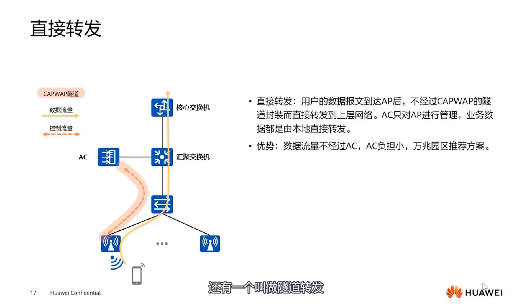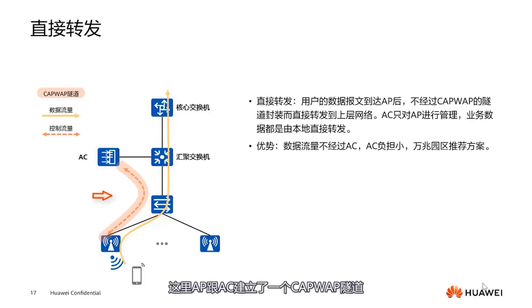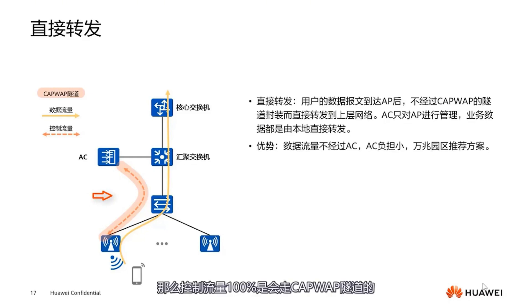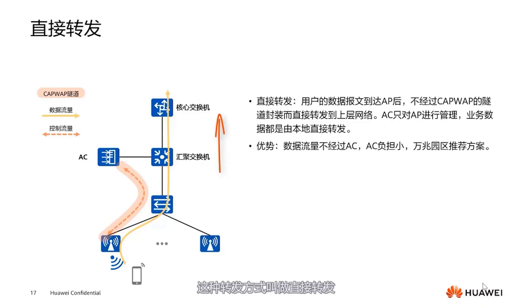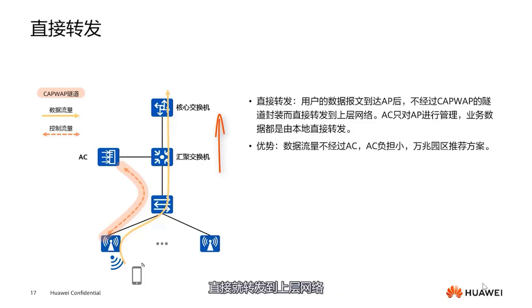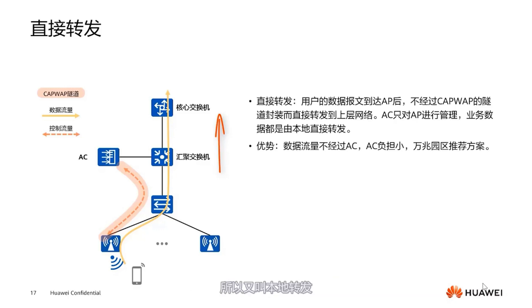Through the CAPWAP tunnel, we introduce two forwarding methods: direct forwarding and tunnel forwarding. In direct forwarding, the AP and AC have established a CAPWAP tunnel, so control traffic will 100% go through the CAPWAP tunnel. But when a mobile phone connects to the AP to access the internet, data traffic does not go through the AC. This forwarding method bypasses the CAPWAP tunnel's encapsulation and is directly forwarded to the upper network. The AC only manages the AP, and all business data is forwarded locally — so it's also called local forwarding.